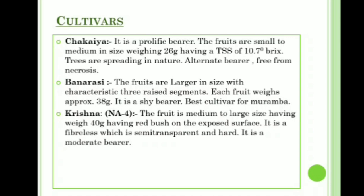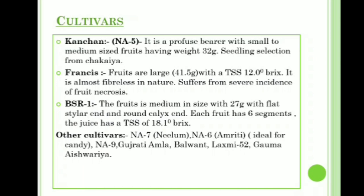Krishna, also known as NF4, has medium to large sized fruits weighing 40 grams, with red blush on the exposed surface. It is fiberless, semi-transparent and hard, and is a moderate bearer. Kanchan, also known as NA5, is a profuse bearer with small to medium sized fruits weighing 32 grams. Its seedling selection is from Chakaya.